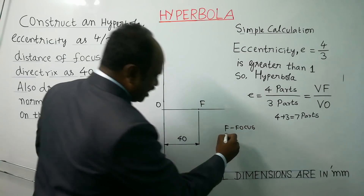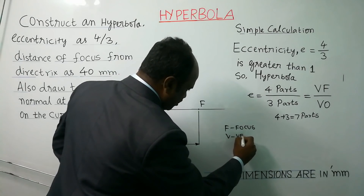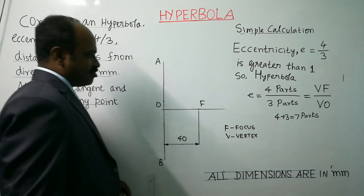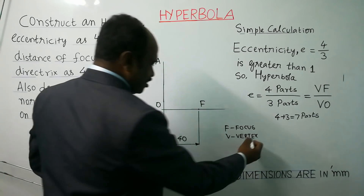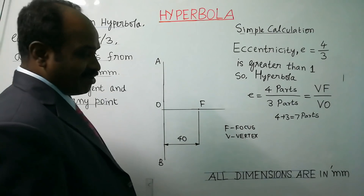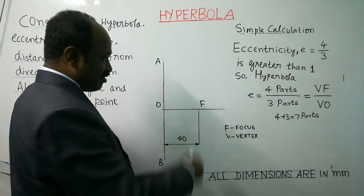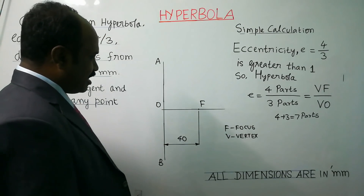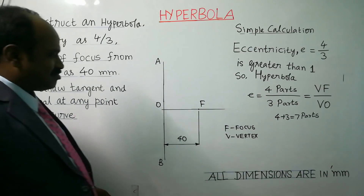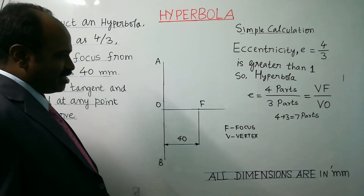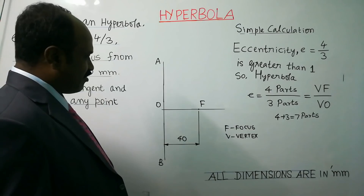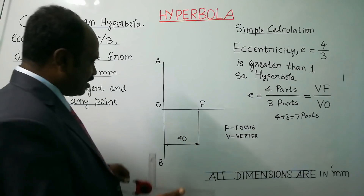V stands for vertex of the hyperbola, which we have to locate. Now we are going to divide the total segment OF into 7 equal parts. The distance of focus from the directrix is 40 mm, and 40 divided by 7 does not give a round number, so we go for an assumption method.